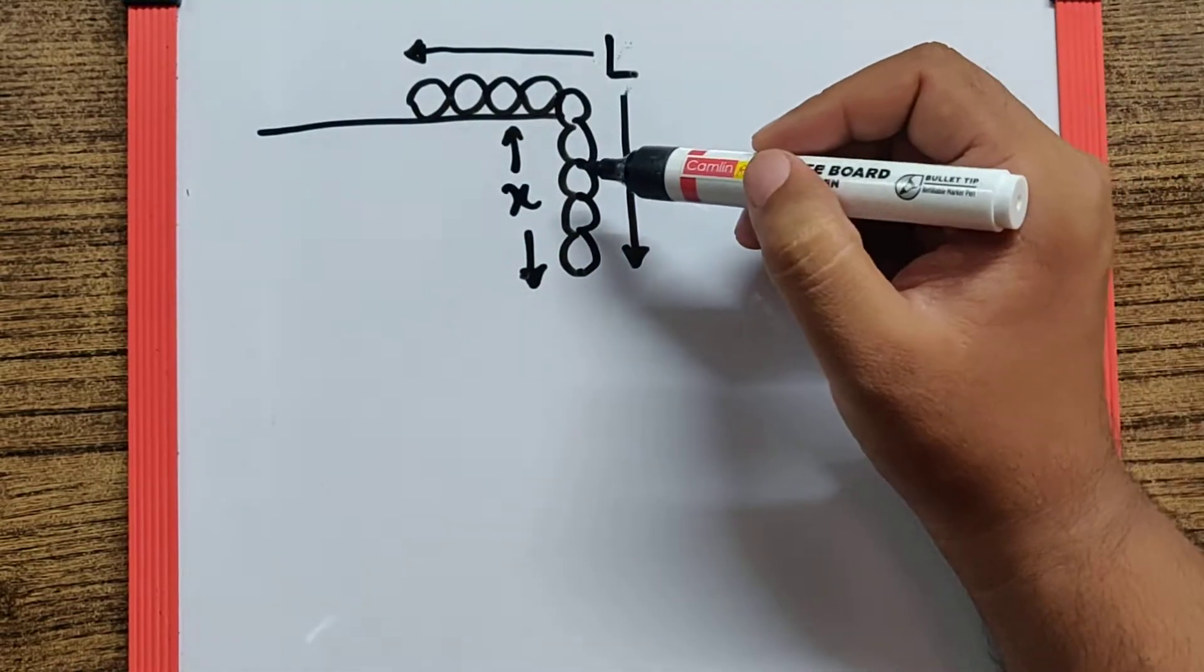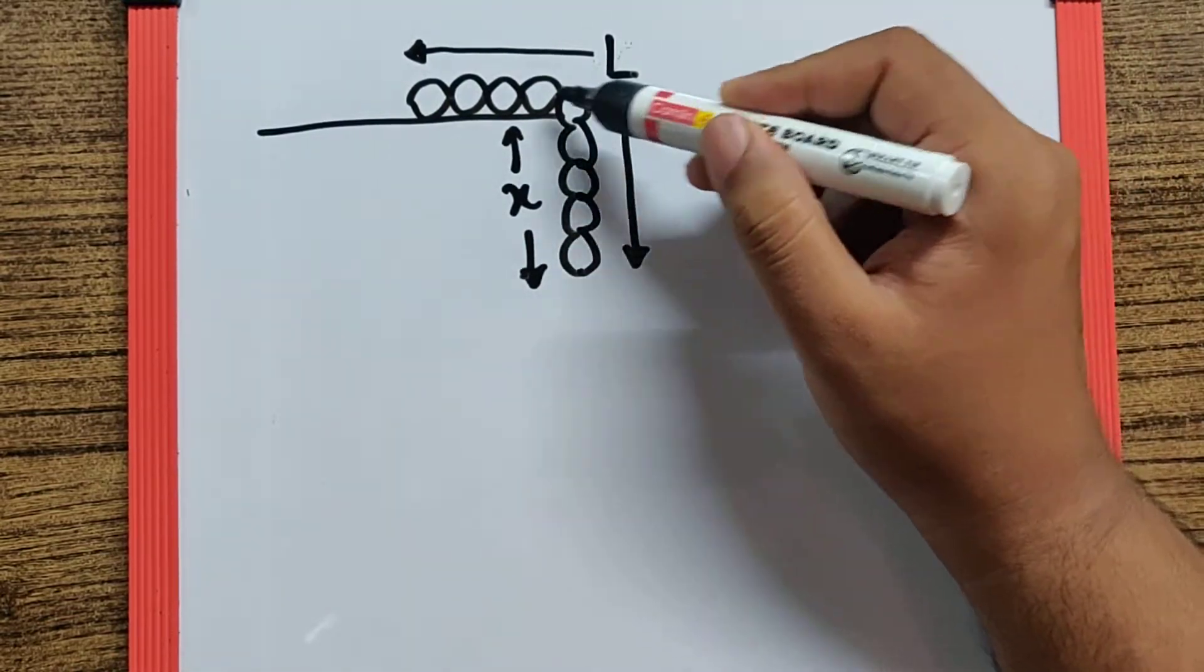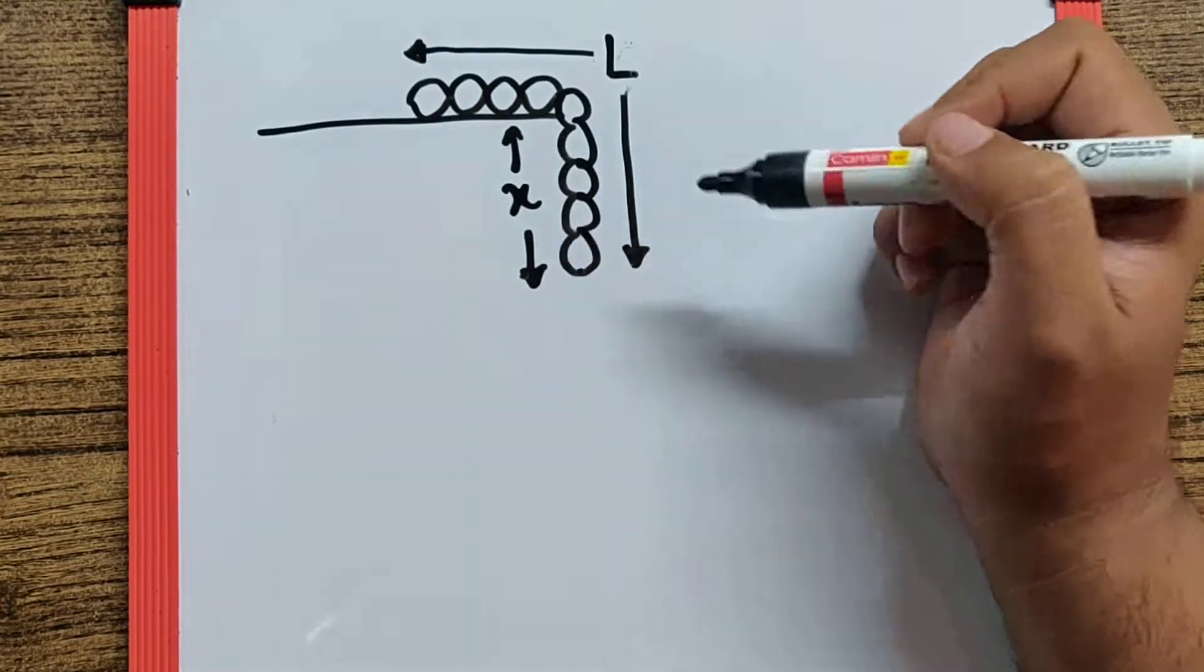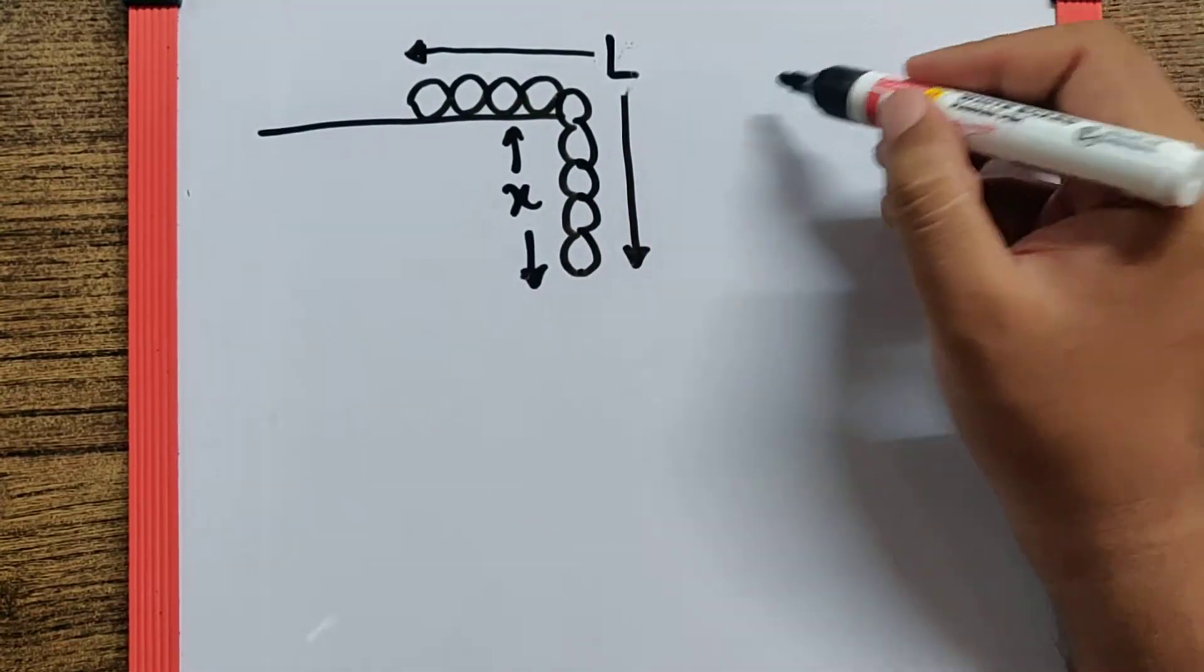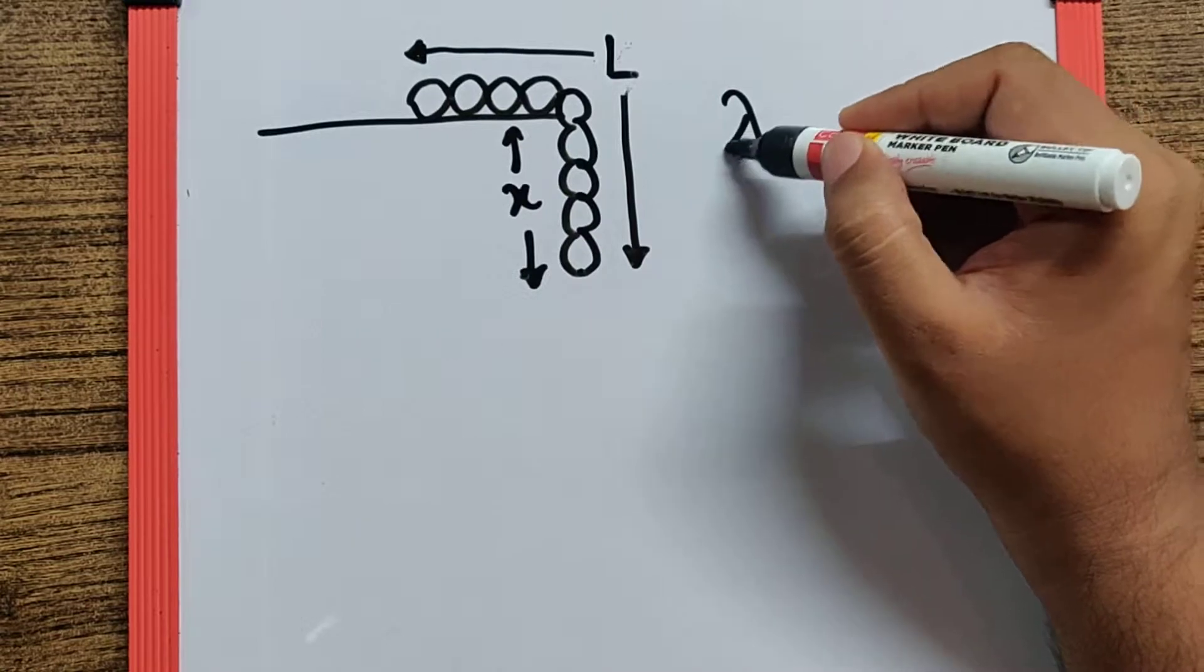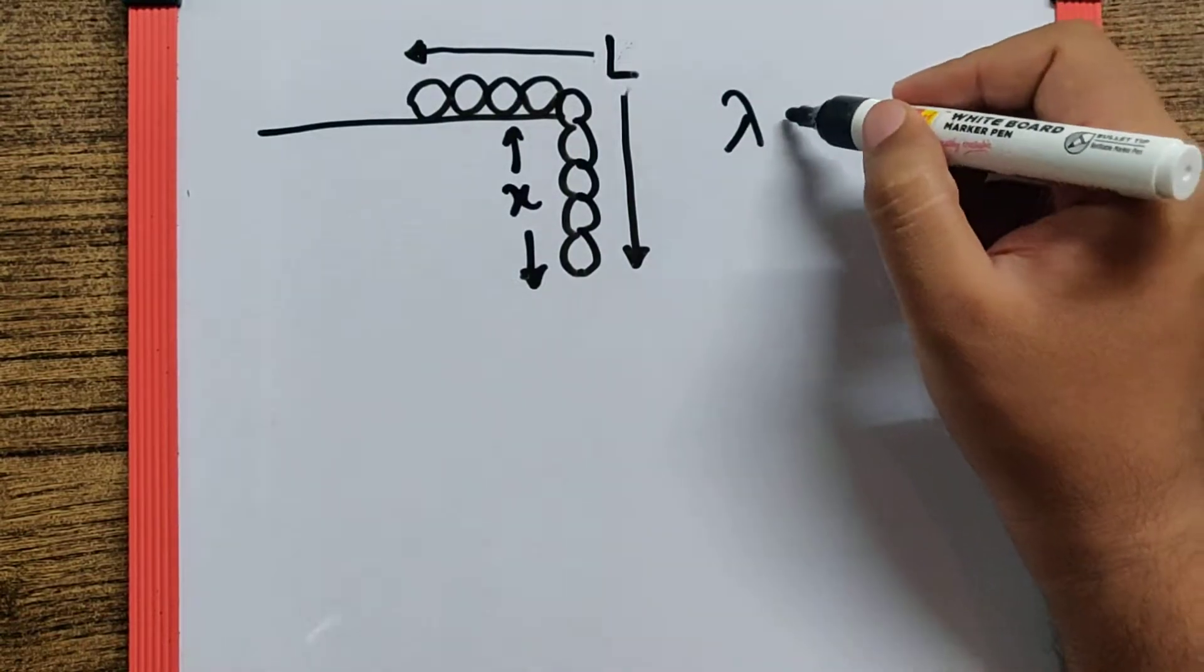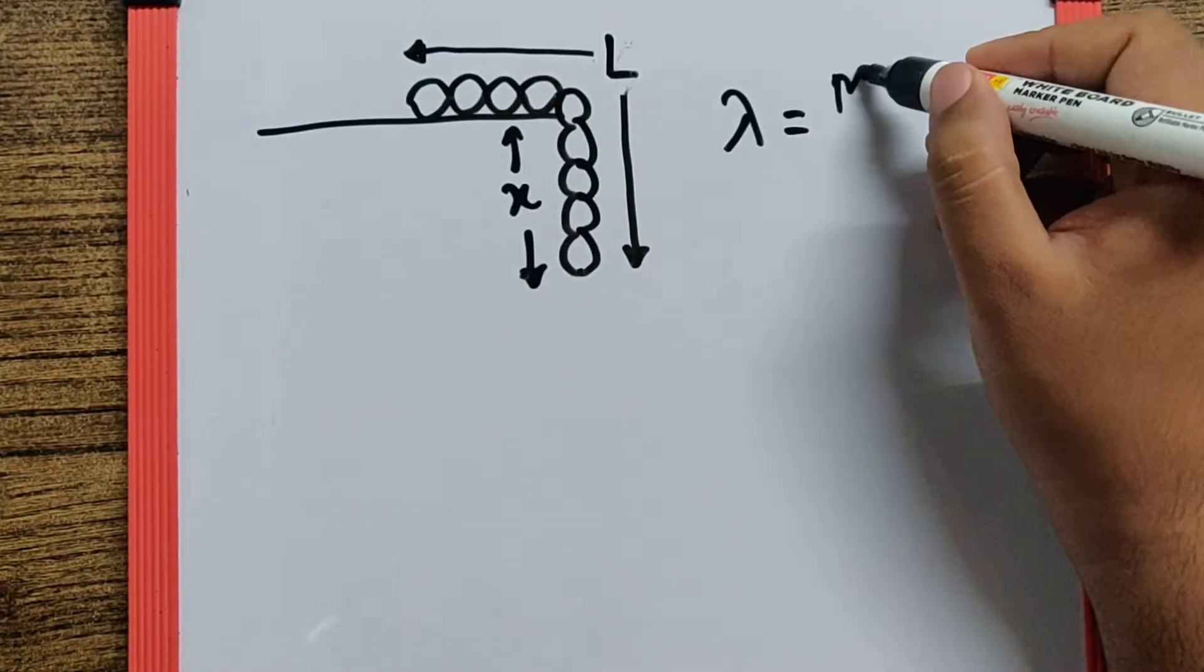Now if we want to pull this entire chain up we need to do some work. So there is a term called linear mass density which is the mass of the wire upon the length of the wire.